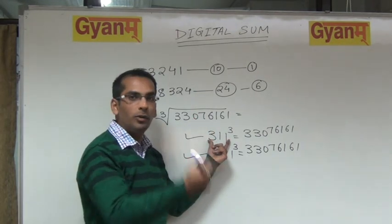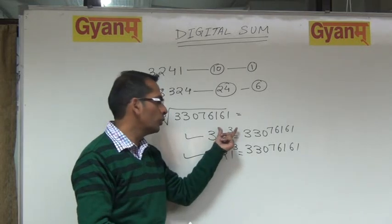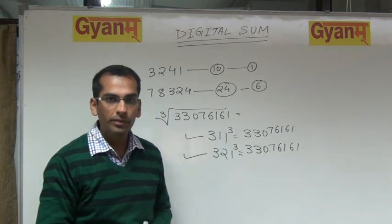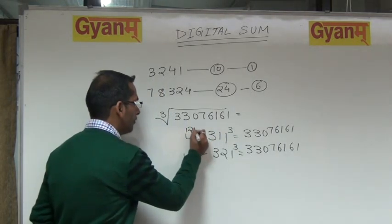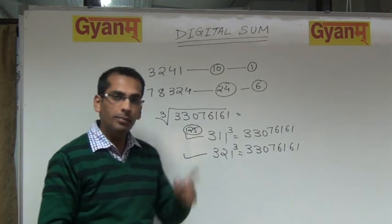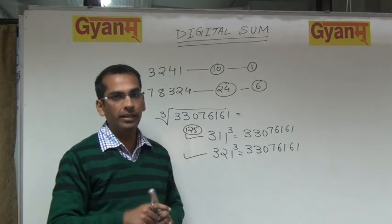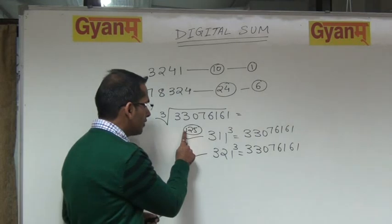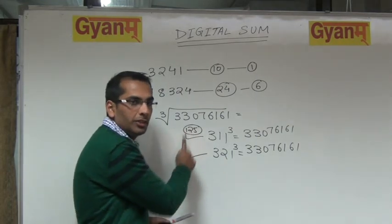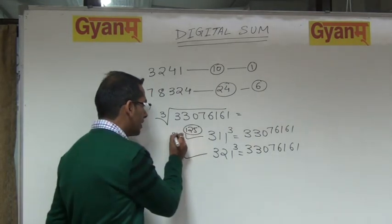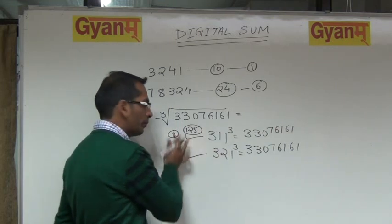Now take the cube of this digital sum, 5. What is the cube of 5? 125. It has not become a single digit yet, so take the digital sum again. What is 1 plus 2? 3. What is 3 plus 5? 8. So the digital sum of 311 cubed is 8.